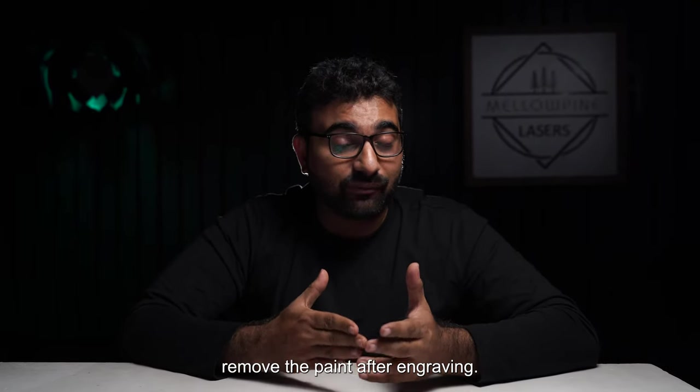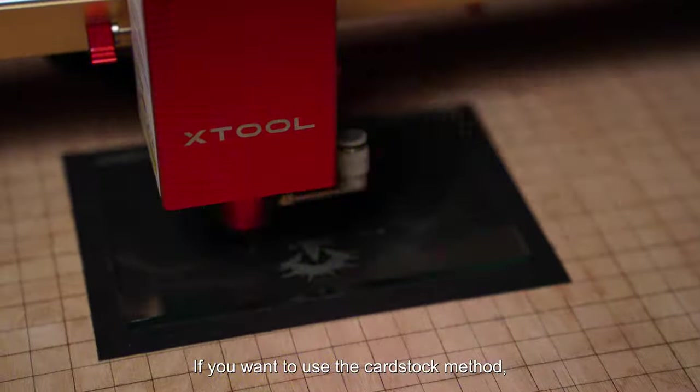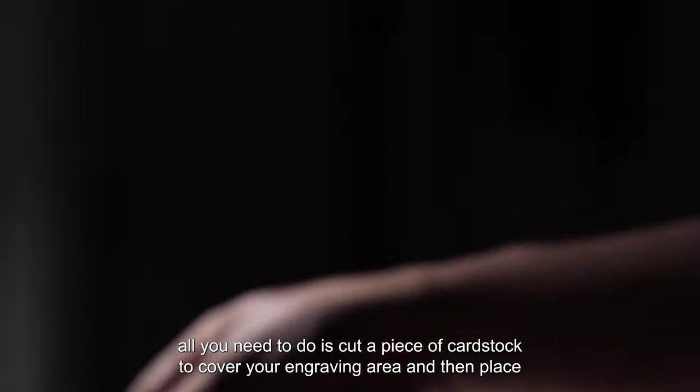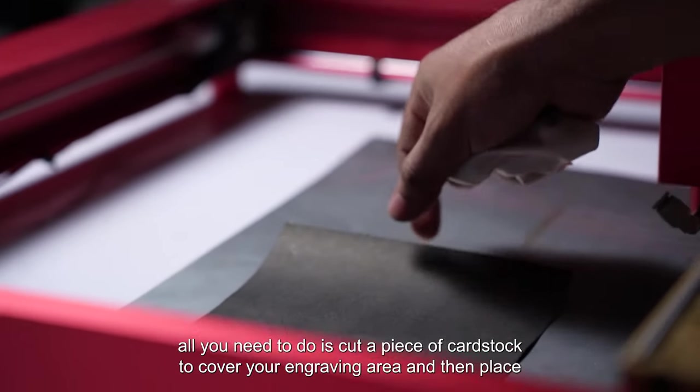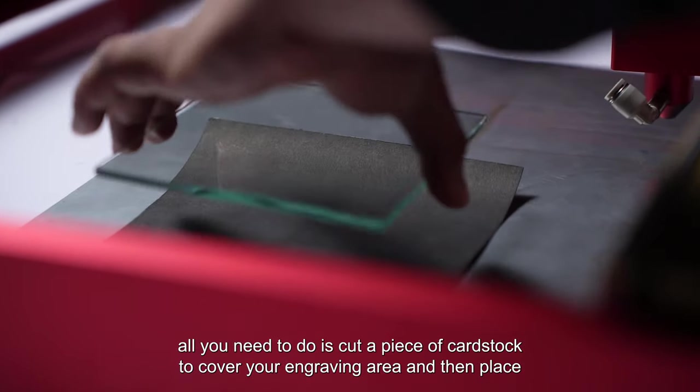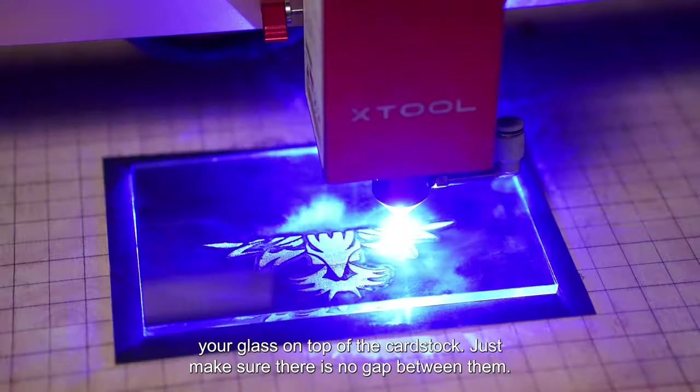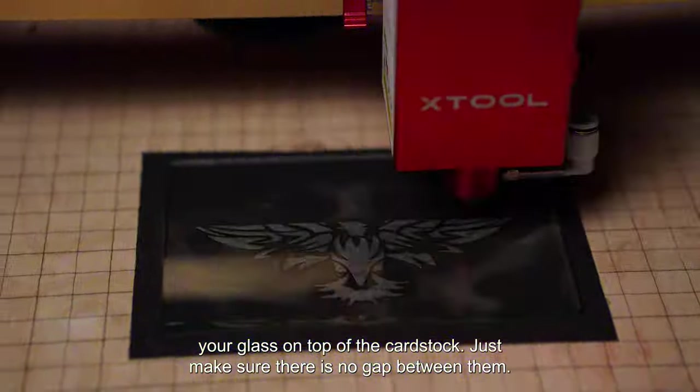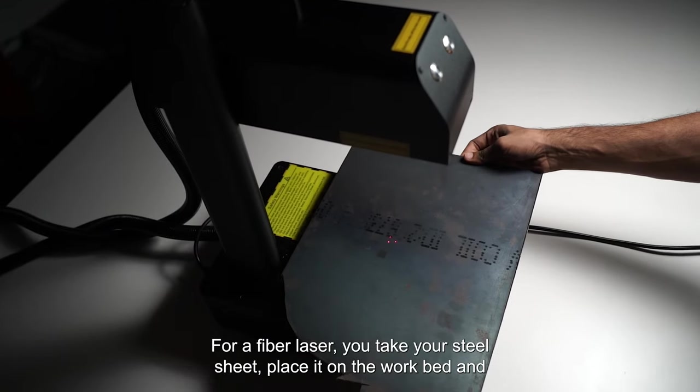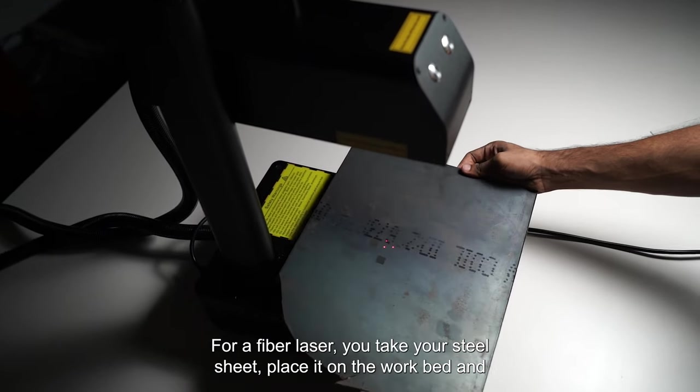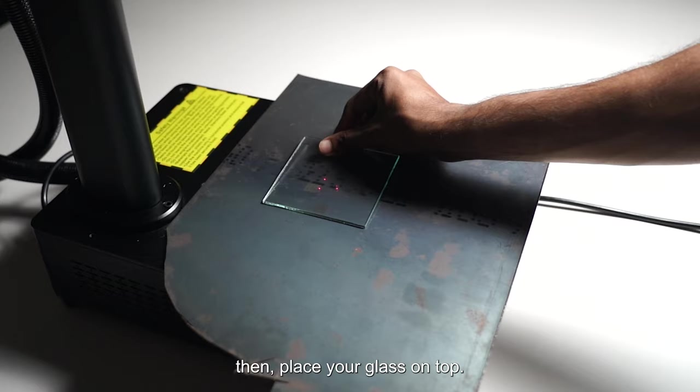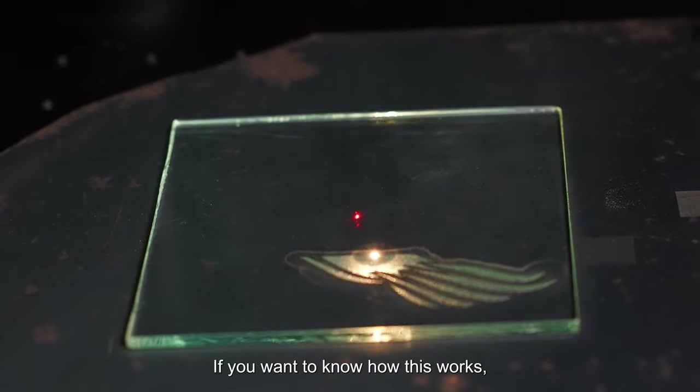If you want to use the cardstock method, all you need to do is cut a piece of cardstock to cover your engraving area and then place your glass on top of the cardstock. Just make sure there is no gap between them. For a fiber laser, you take your steel sheet, place it on the work bed, and then place your glass on top. If you want to know how this works, I'll explain it later in the video.